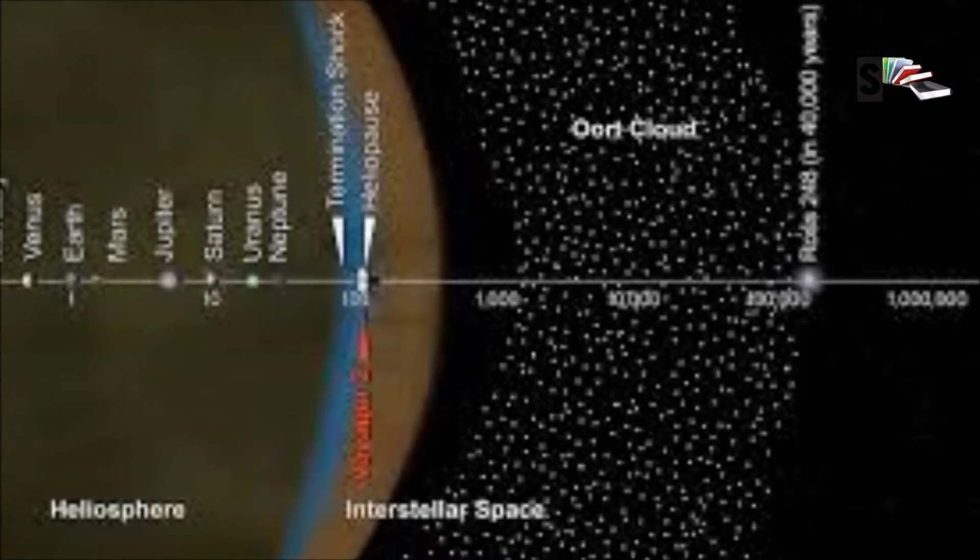The Oort Cloud is named for Jan Oort, the Dutch astronomer who predicted its existence in the late 1950s. The leading theory about the Oort Cloud's formation is that the icy objects were not always so far from the Sun. After the planets formed, some of the planets' gravity either ejected these icy objects out of the solar system entirely, or flung them into eccentric orbits where they are held by the Sun's gravity and also affected by galactic influence.